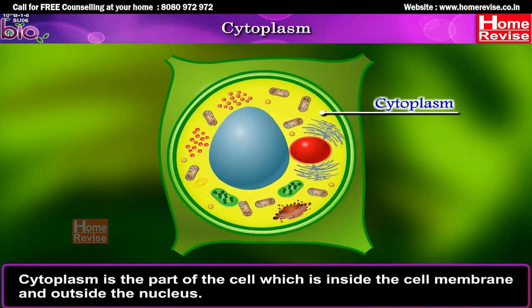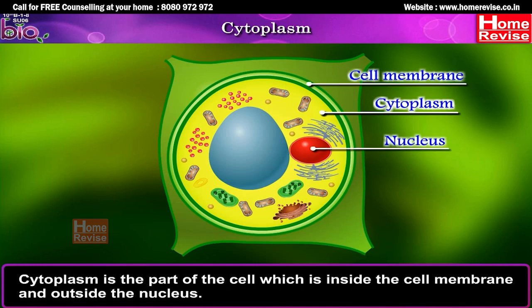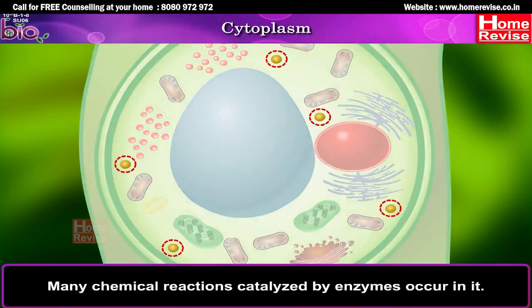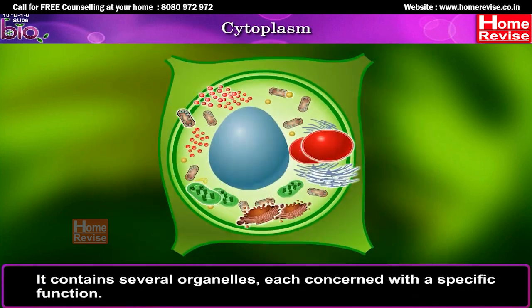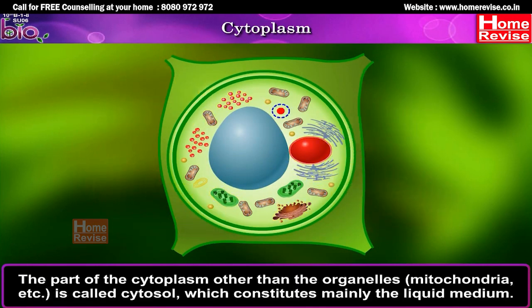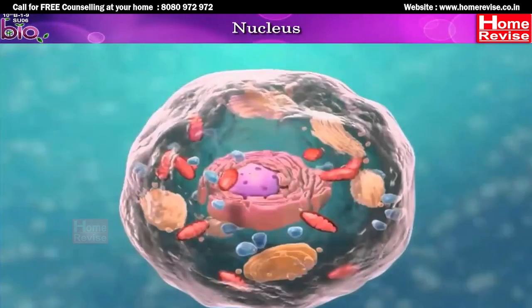The cytoplasm is also a part of the cell. It contains several organelles, each concerned with a specific function. The part of the cytoplasm other than the organelles — such as mitochondria — is called cytosol, which constitutes mainly the liquid medium.